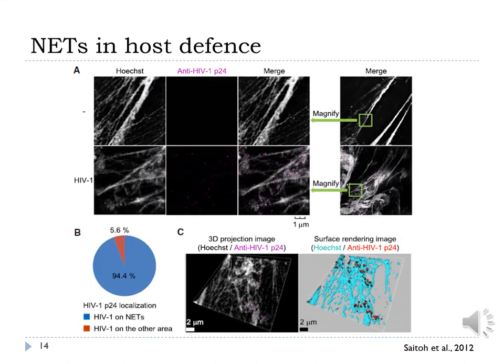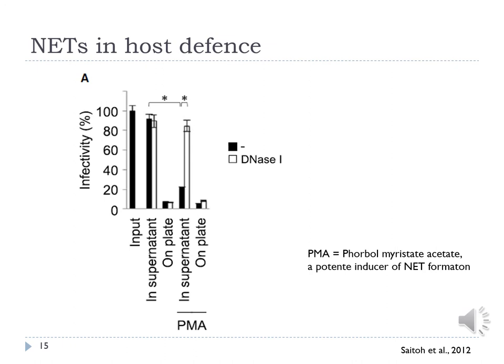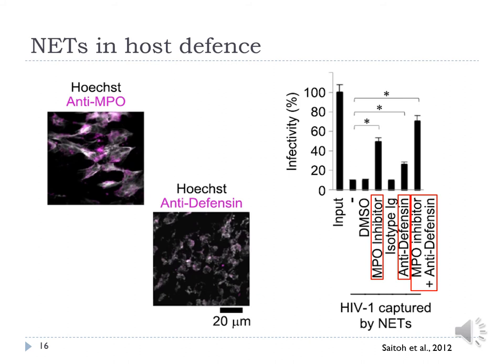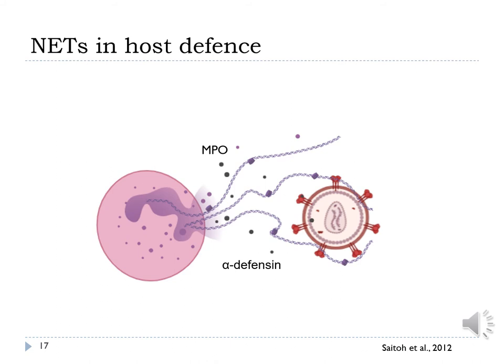In another work, Saito and colleagues showed that NETs mediate a host defense response to HIV-1 in vitro. They showed that HIV-1 variants were captured on the NETs. They observed that infectivity of HIV-1 in the culture supernatant was reduced after incubation with PMA-stimulated neutrophils, but was not reduced after DNase-1 treatment, indicating that DNA produced by PMA-stimulated neutrophils mediates inactivation of HIV-1. Furthermore, immunofluorescence analysis revealed that MPO and alpha-defensin were abundantly expressed on NETs, and that inhibition of MPO activity and neutralization of alpha-defensin resulted in an invariant virucidal response to HIV-1 on the NETs. Therefore, this data suggests that NET formation can work as an antiviral response promoting HIV-1 elimination through myeloperoxidase and alpha-defensin.